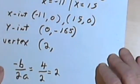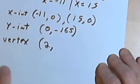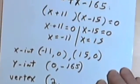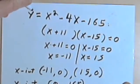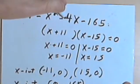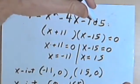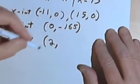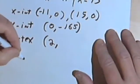and I have to find out what the y-value is going to be. So what I'll do is I'll take my equation, y equals x-squared minus 4x minus 165, and I'll take the x's and replace them with 2's.